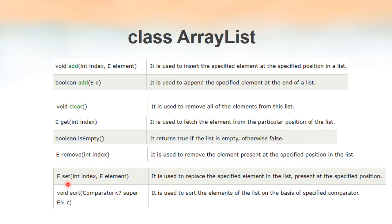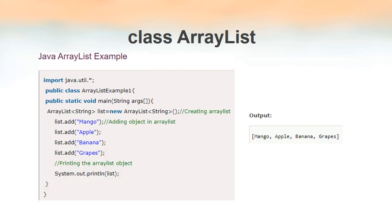If we want to replace a particular element at a particular index we use set(int index, E element). For example, if we have a list of 10 elements and want to replace the fifth element, we use this set method. It takes two parameters — index and element — and replaces the element at that index with the new element. We can also use the built-in sort method; we specify a Comparator as a parameter and the list will be sorted based on that comparator.